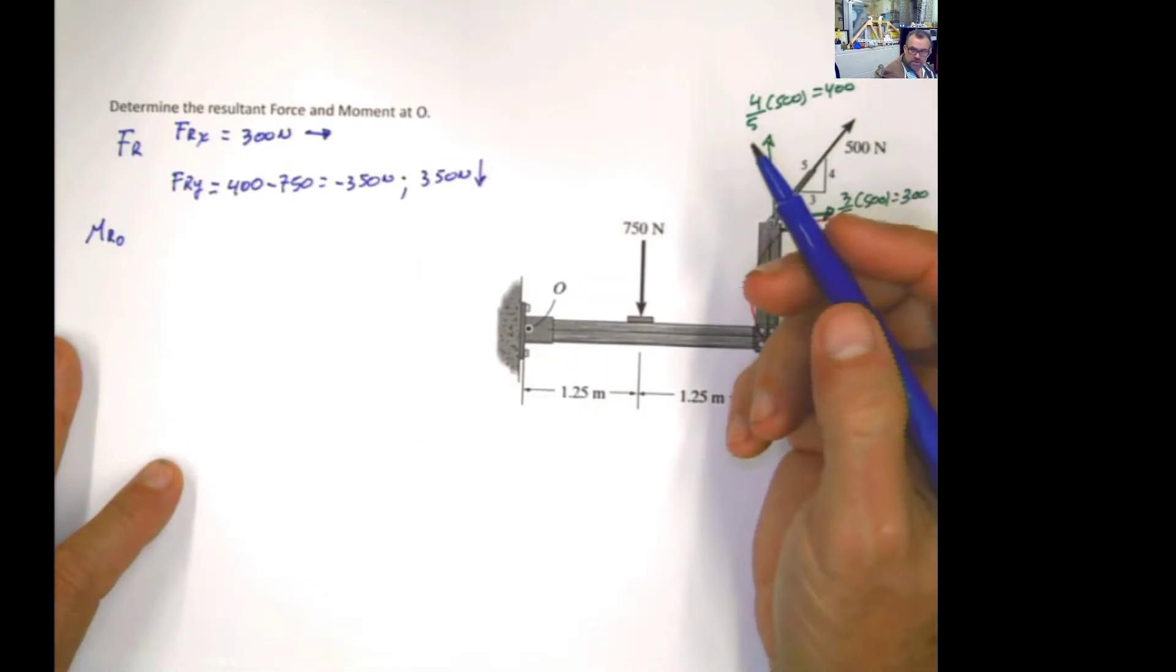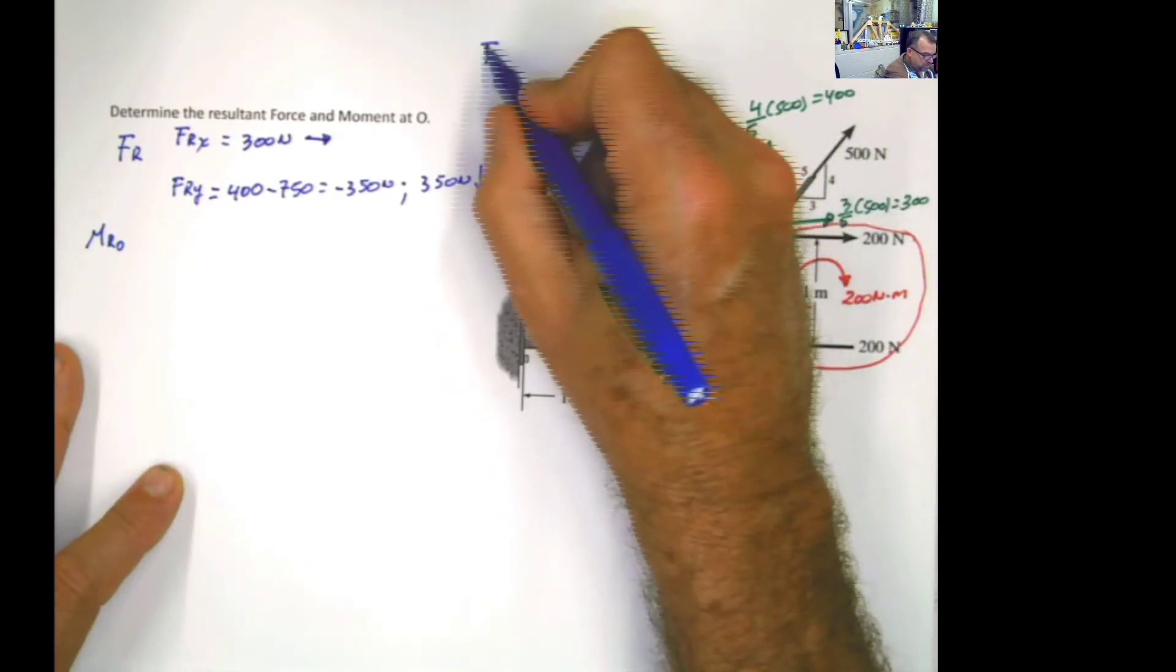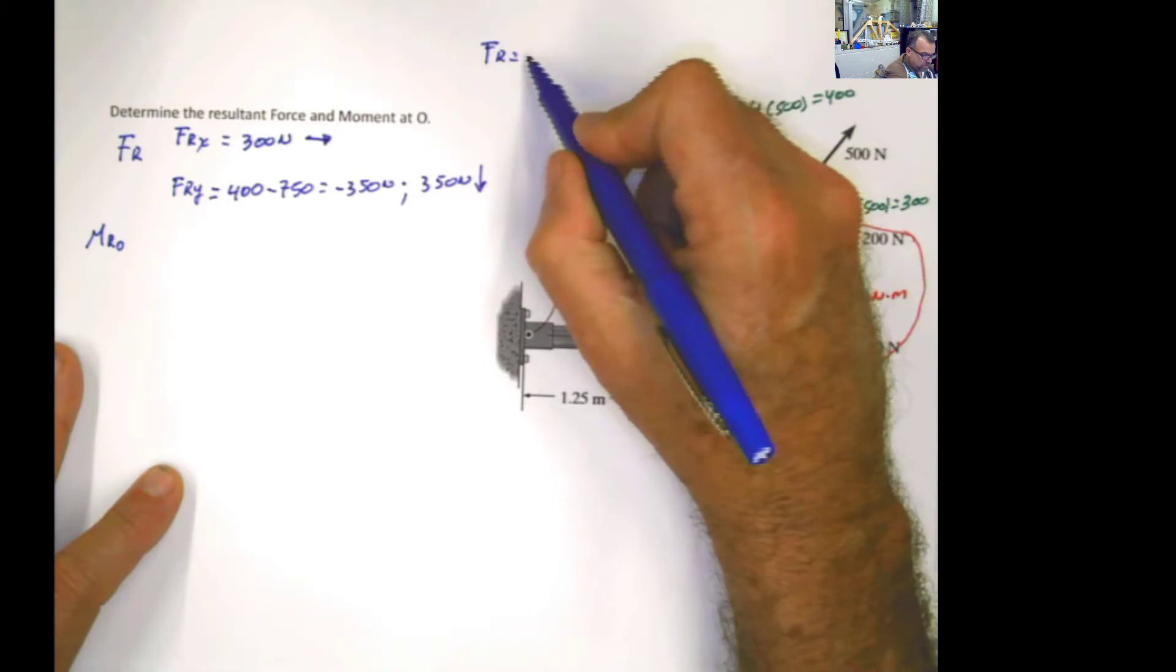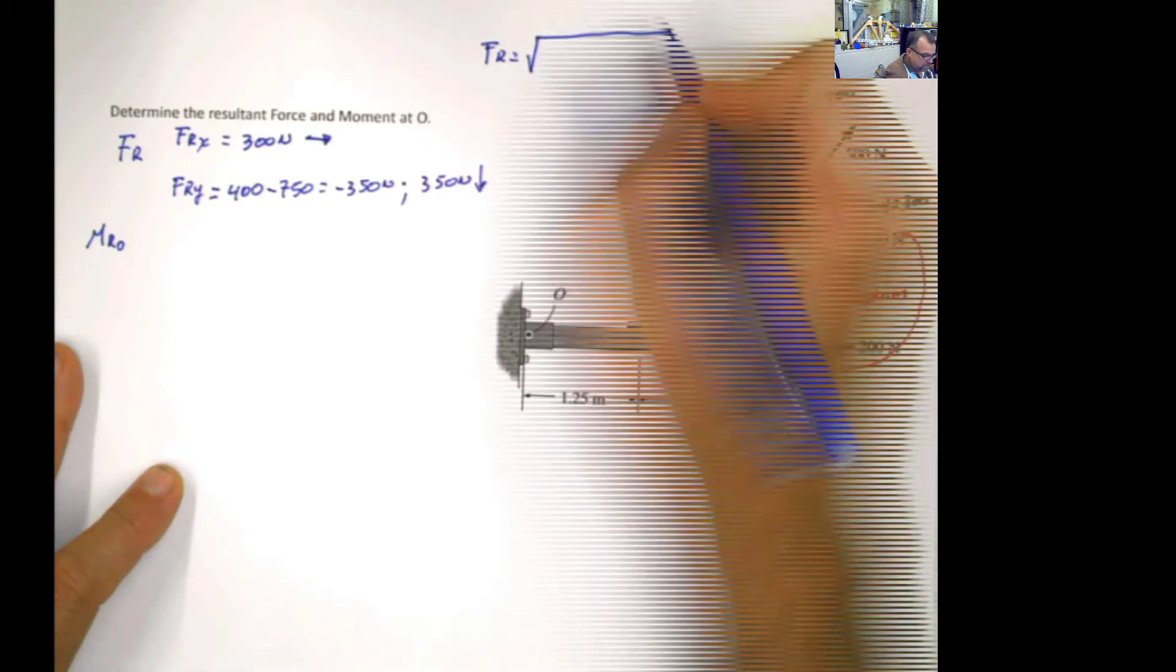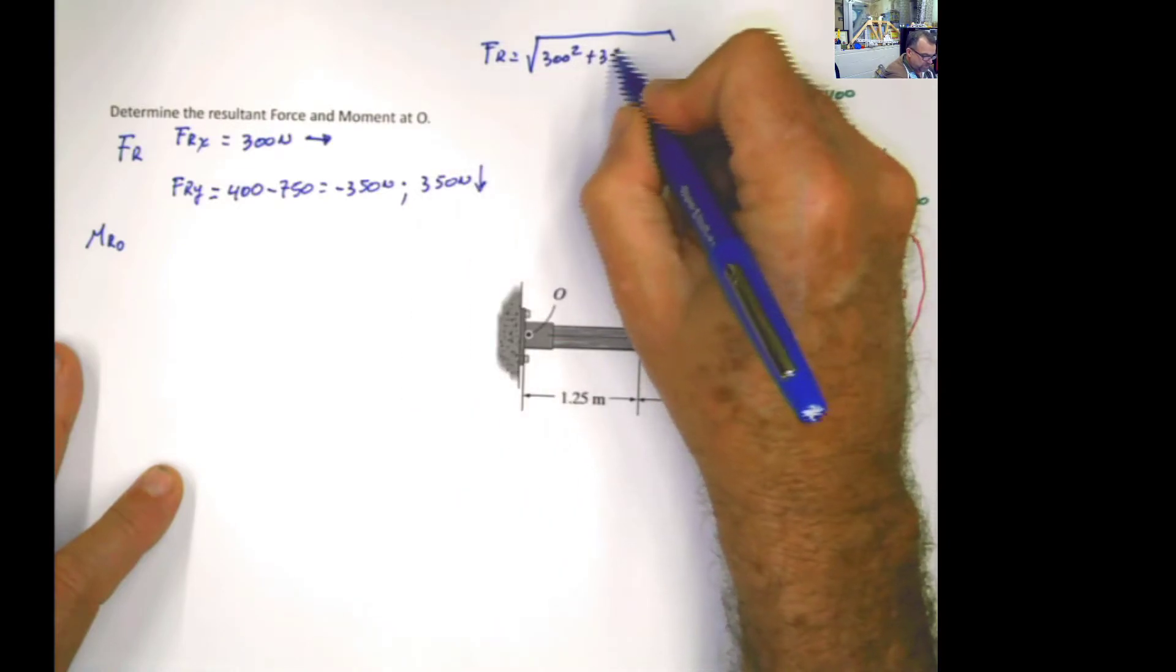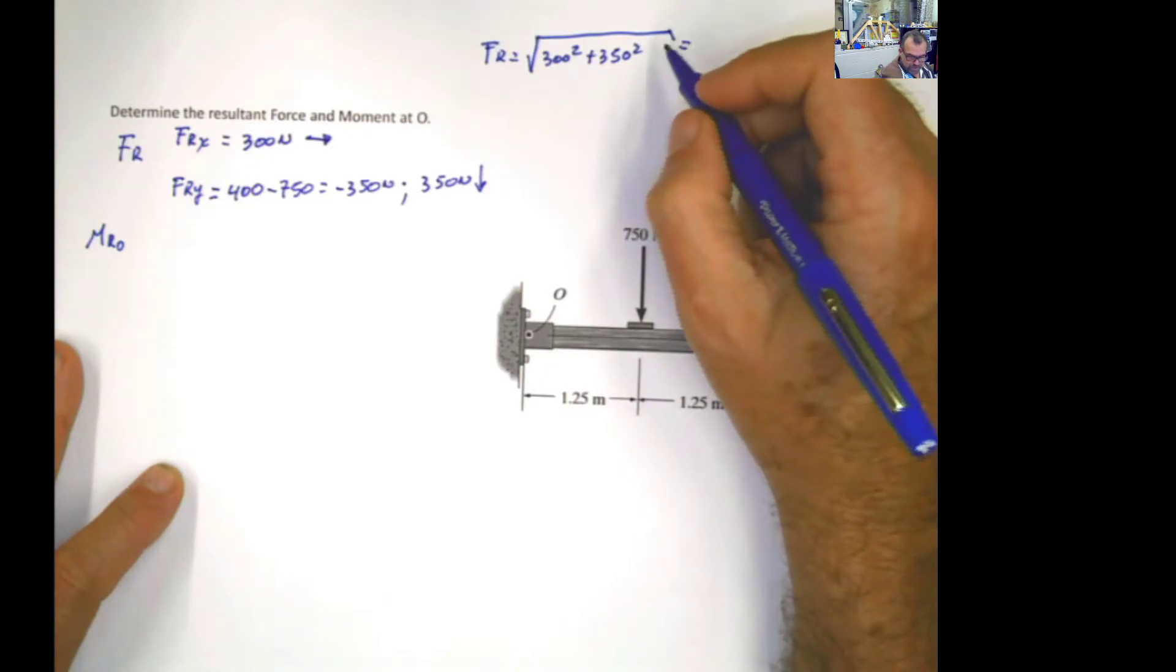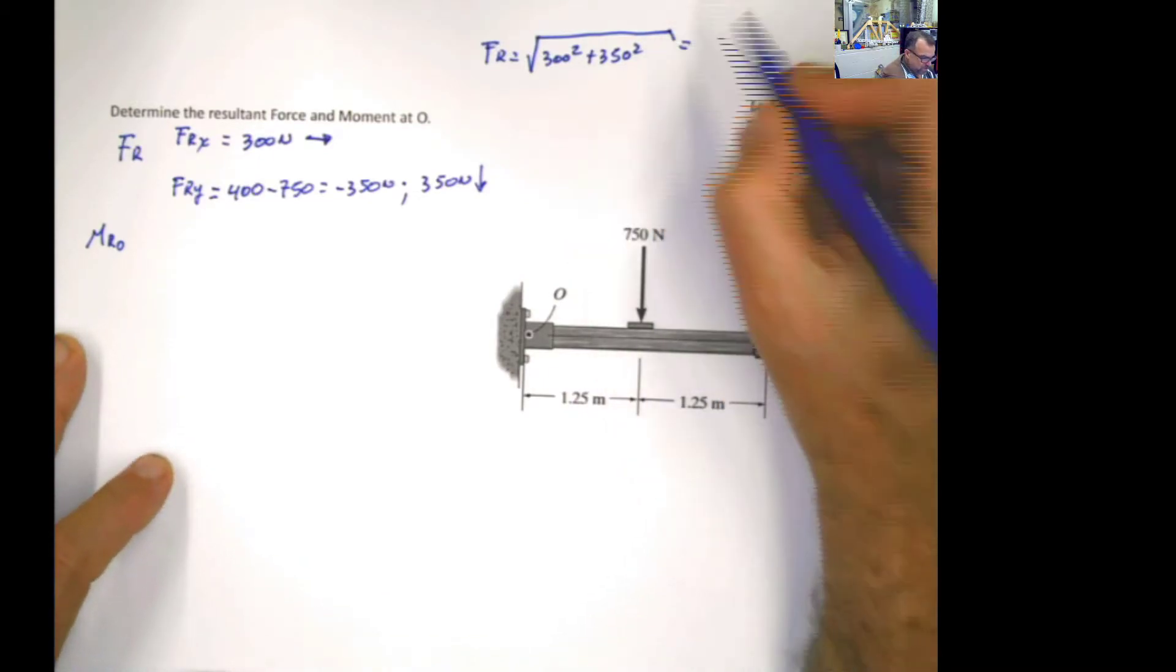If you want the magnitude, which the problem is asking you for the magnitude of the force, so the resultant force magnitude F_R will be the square root of this square plus this square. So the resultant force is going to be 461 newtons.